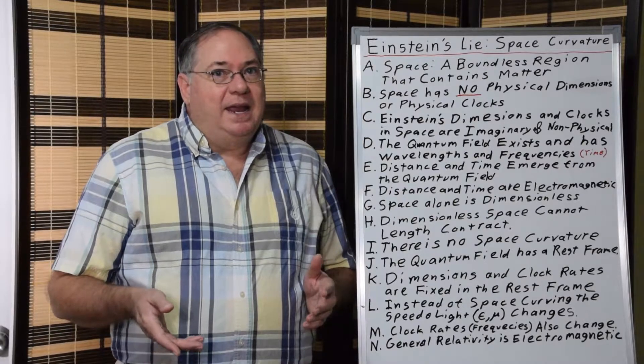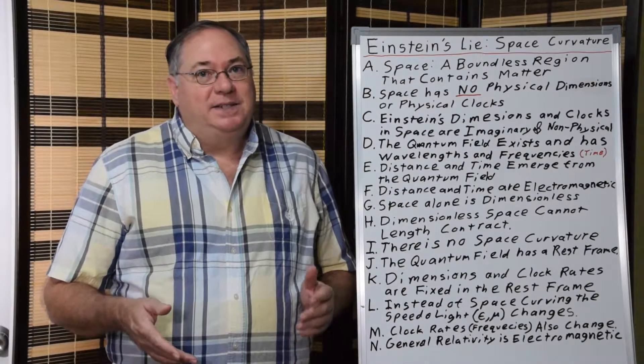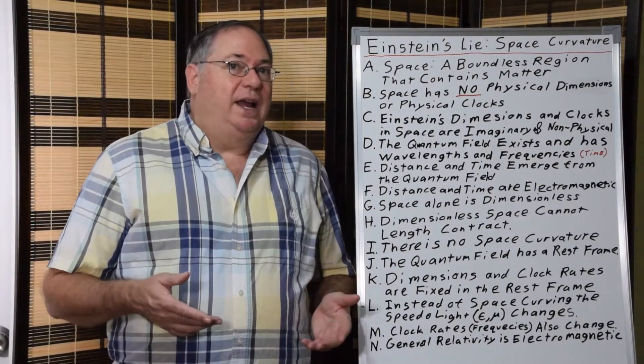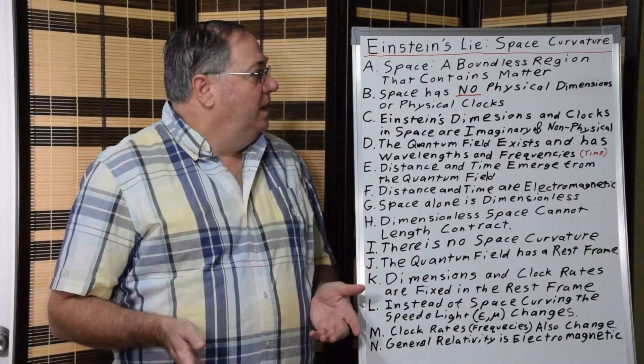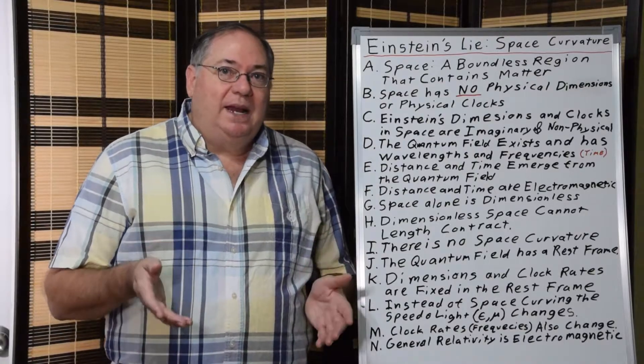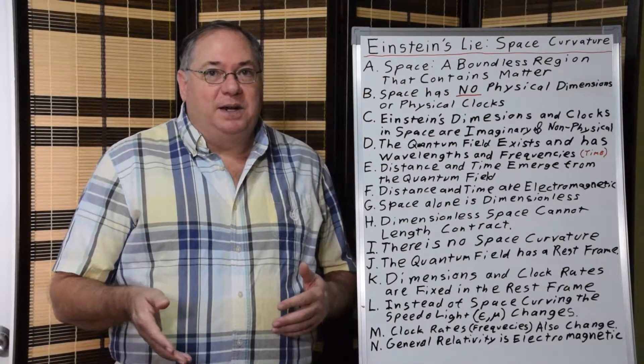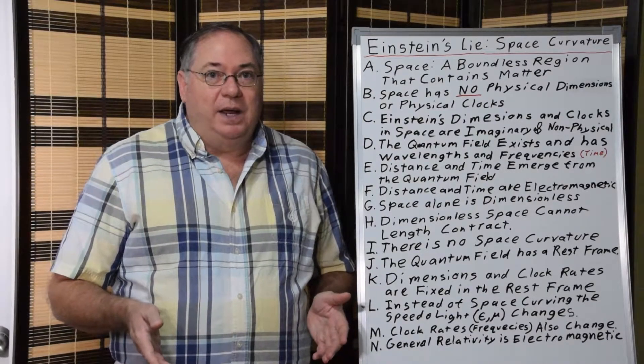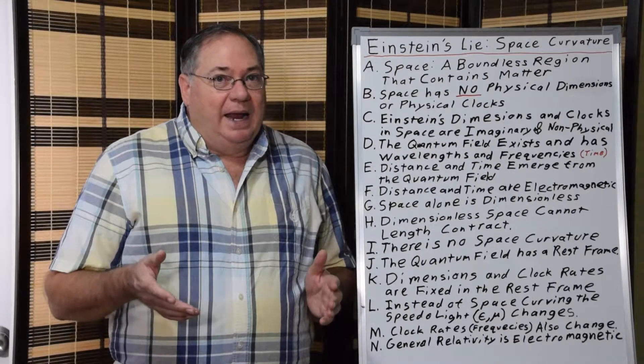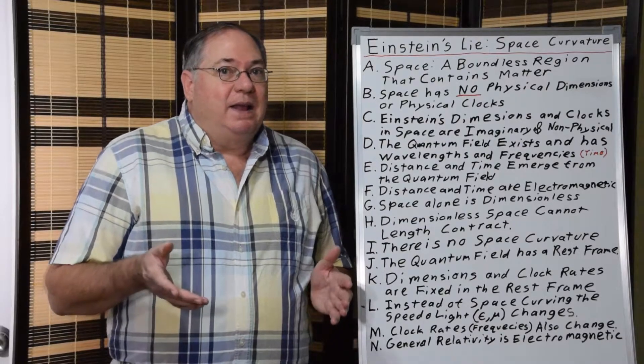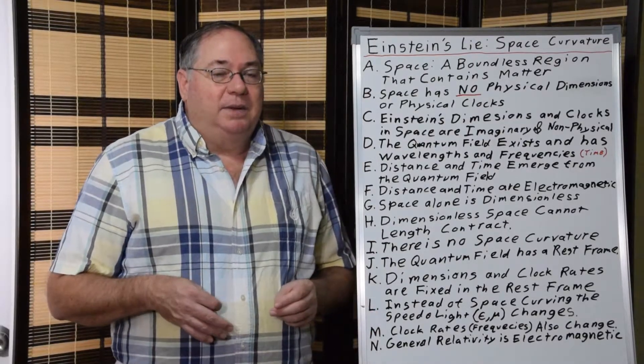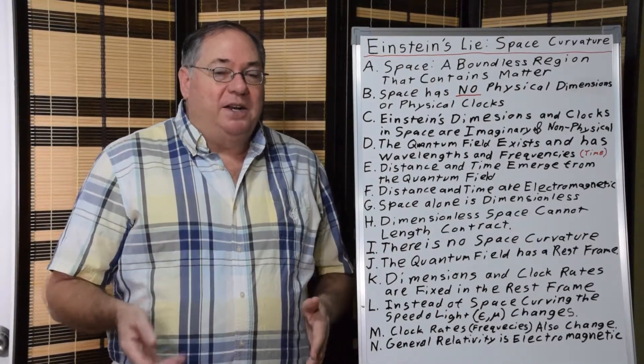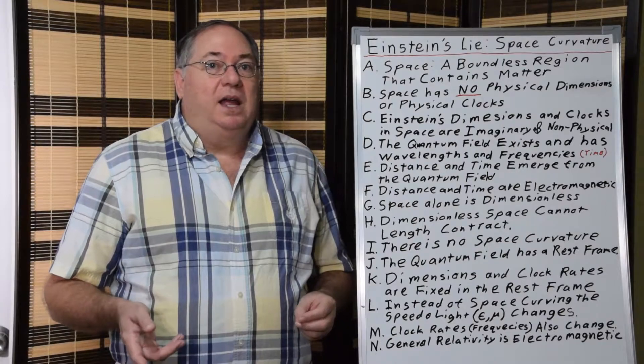Yet, he came up with the imaginary idea that space still had dimensions and still had clocks, so it still had time. He took this idea of these imaginary dimensions that he couldn't explain in any physical way, and then developed a theory around that, or two theories, special relativity and general relativity, based on imaginary distances and imaginary clocks.